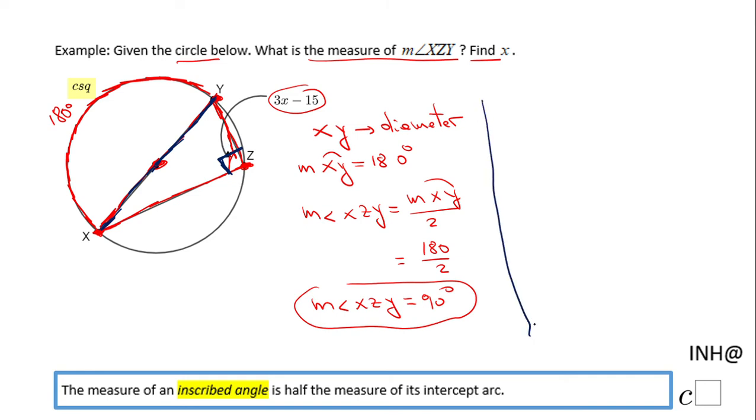Now we can move to the next part where we need to find x. Remember, this angle is 3x minus 15, and the measure of that angle is 90 degrees.